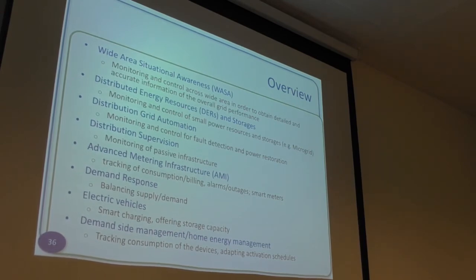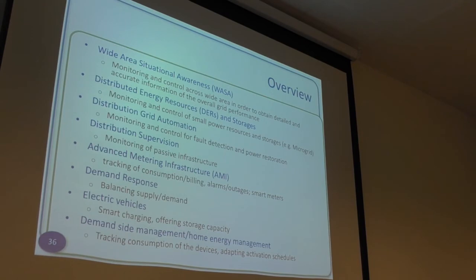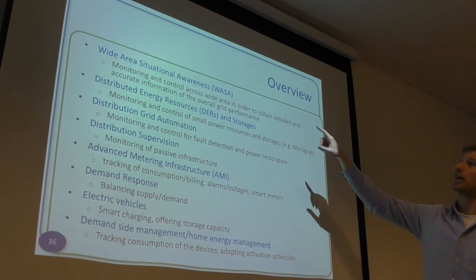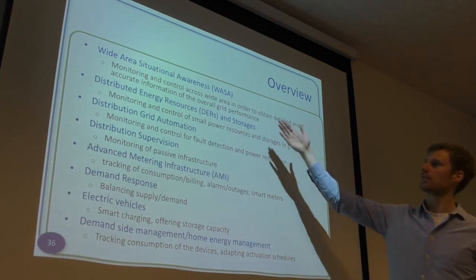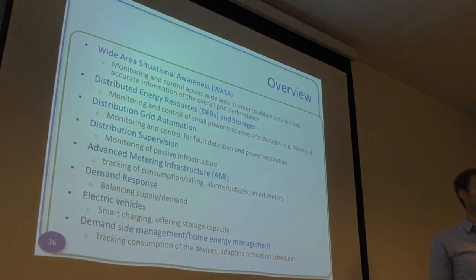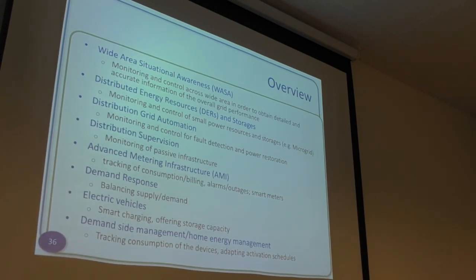The next part is about different applications or services in the smart grid. One of the most important is Wide Area Situational Awareness — what we discussed earlier about monitoring and to some extent controlling across a very wide area of the power grid, accounting for renewable energy generation, having an overview of the grid, and possibly taking control actions in different places.